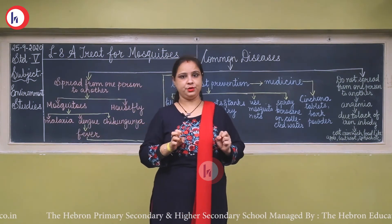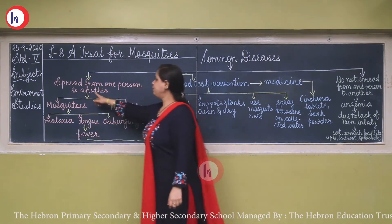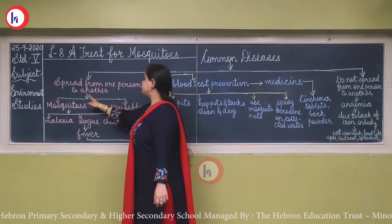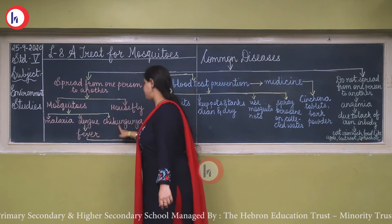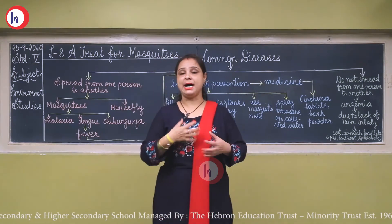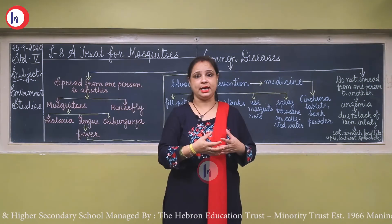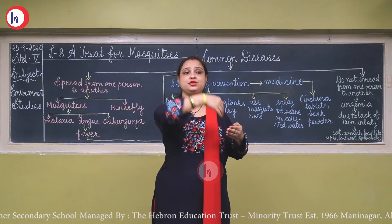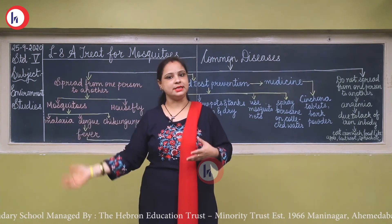I hope children you have understood the lesson. Now let's do the flow chart once again. Common diseases: those which spread from one person to another, like through mosquitoes and houseflies, causing malaria, dengue, and chikungunya. When a mosquito bites a person who already has malaria, and then bites a healthy person, that healthy person will also get the same disease.